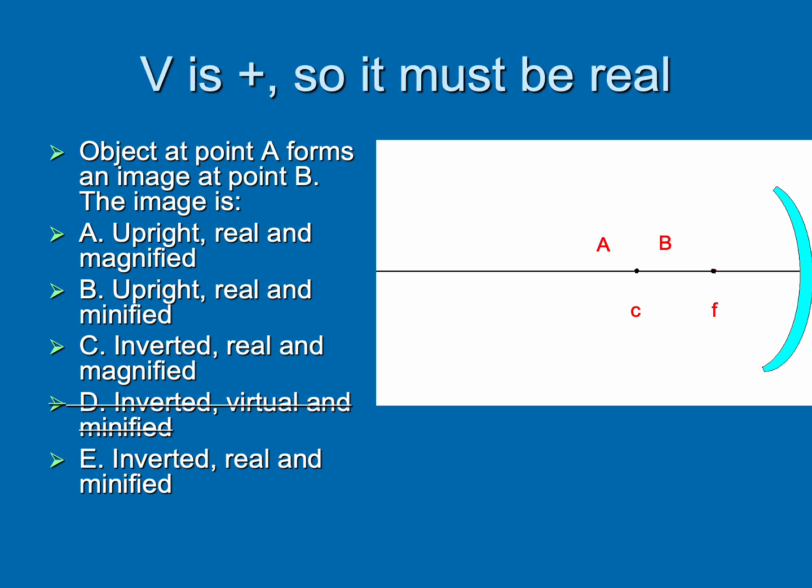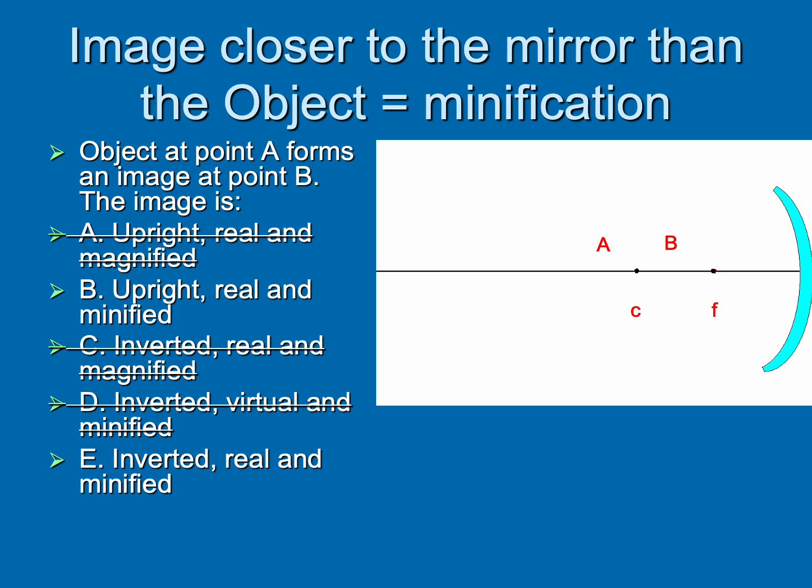Number one, you could just sketch in an object at A and do the three rays, and it would tell you what B looks like. Or you could have memorized what is the answer when I have the object outside these two points. Or you could use some deduction here. We know that the image is on our side of the mirror, so it must be real. So any choice that says virtual, let's throw that out. We also know that the image is closer to the mirror than the object, and that's always going to equal minification. So anything that says magnified, I can throw those out. Now I'm down to kind of Vegas odds here. I've got two choices. It's 50-50.